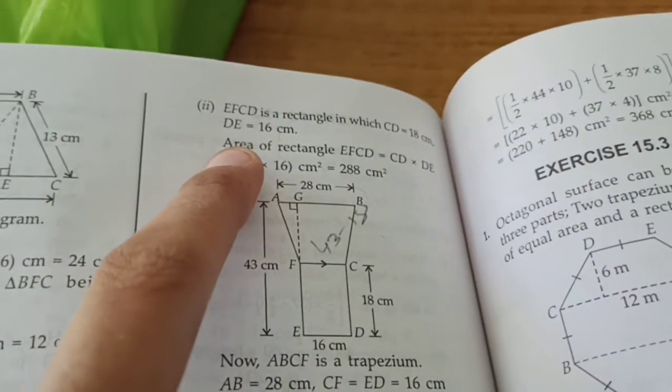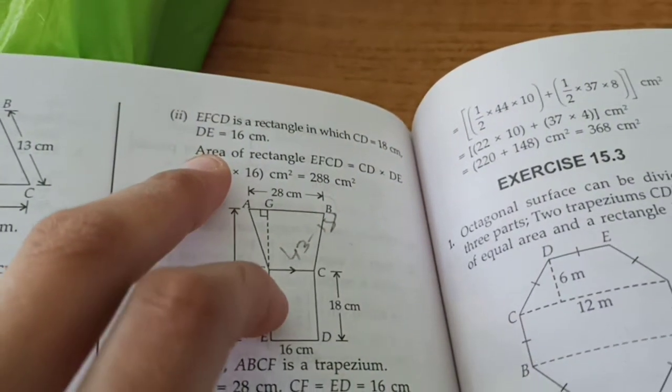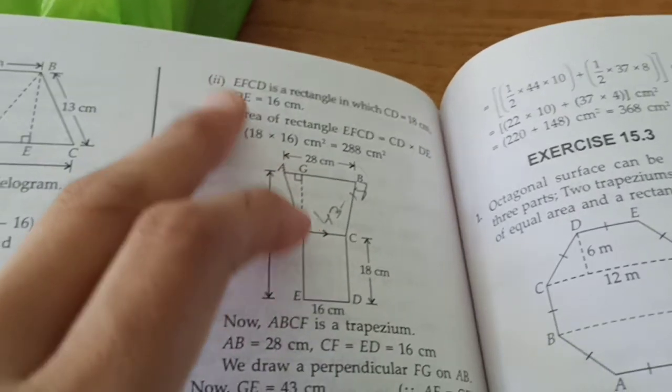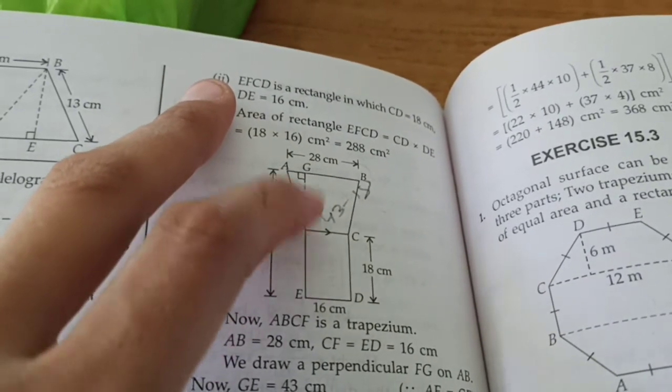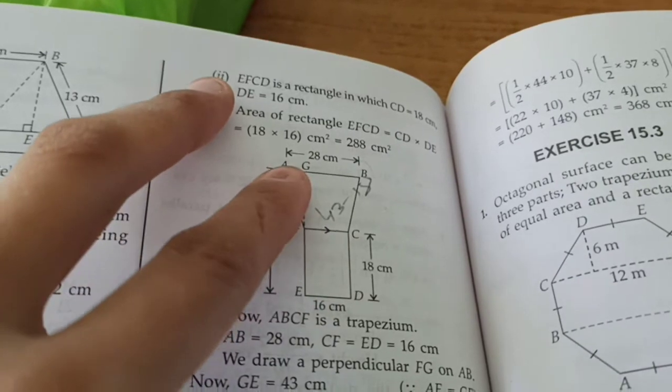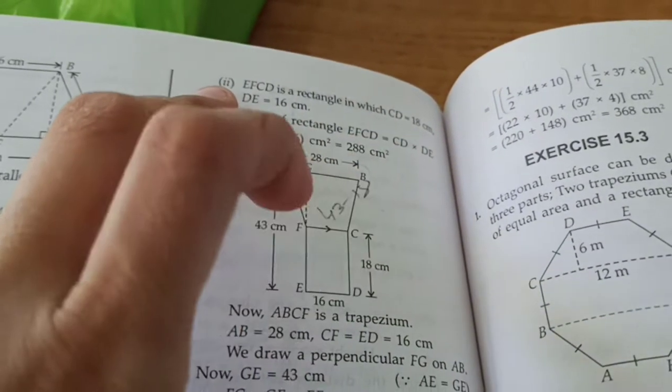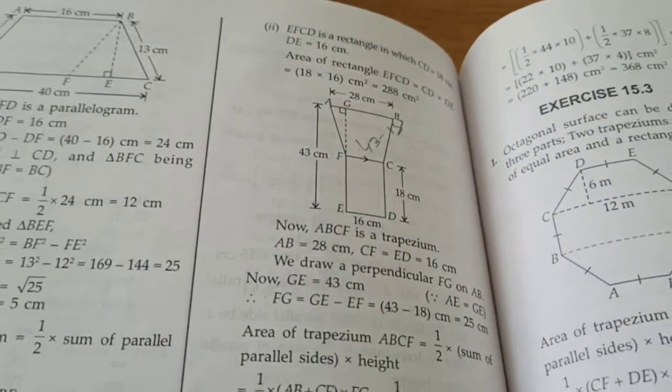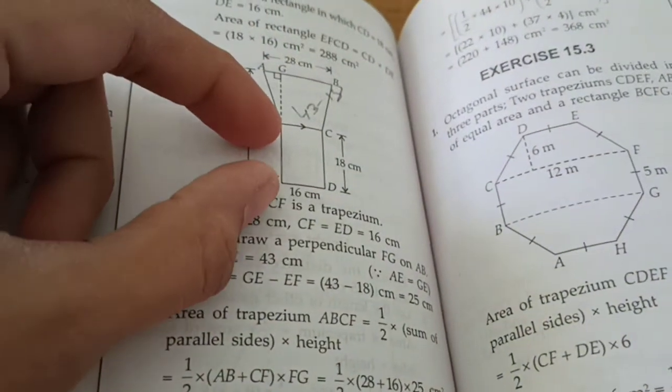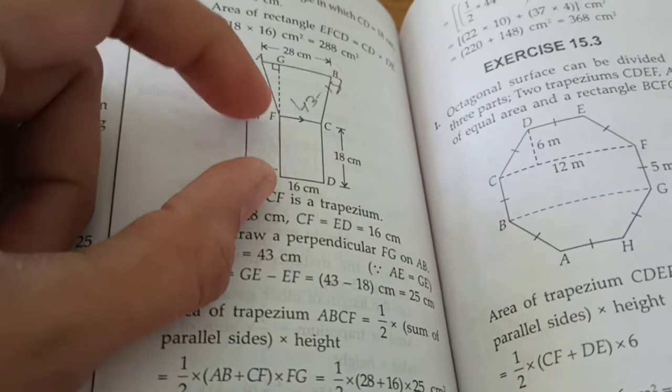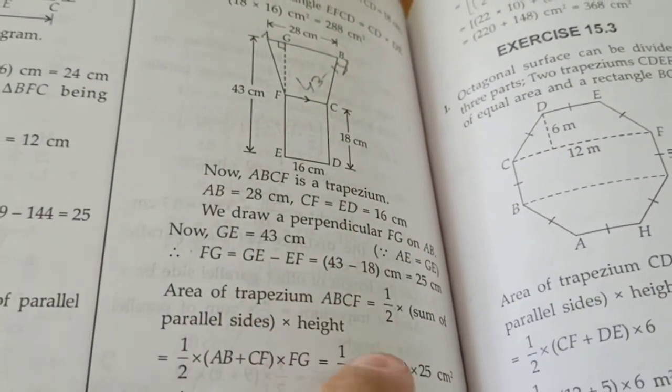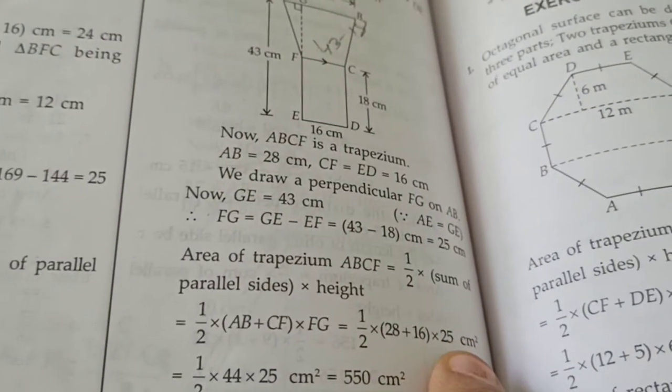So, first of all area of rectangle humme find karna hai. Niche wala that is 288 cm square. Then area of trapezium humme find karna hai, that is half multiplied by FG multiplied by FC plus AB because sum of two parallel sides. So FC will be equals to 16 centimeter right. So 16 plus 28 multiplied by 25.